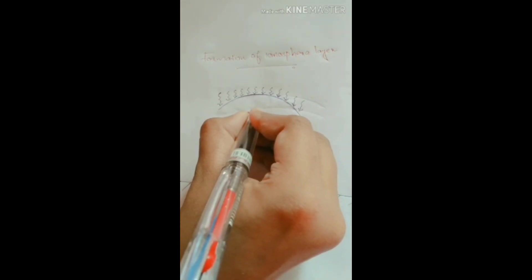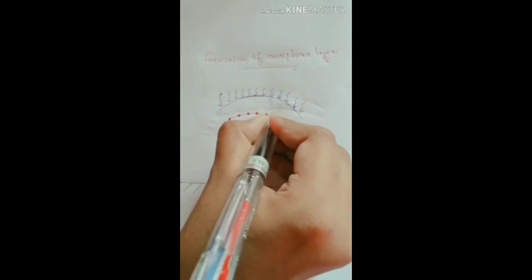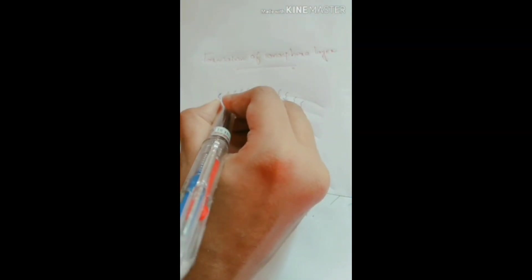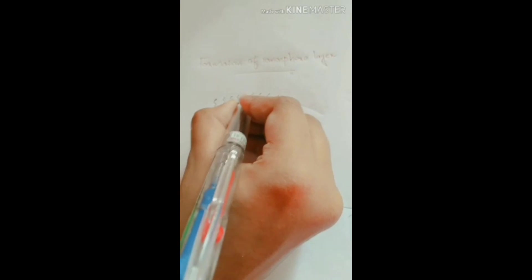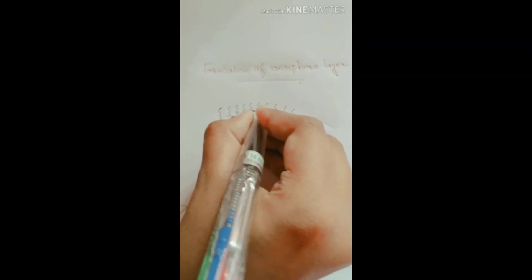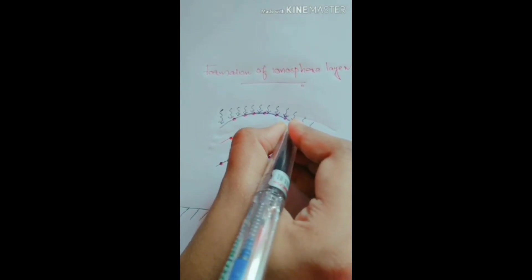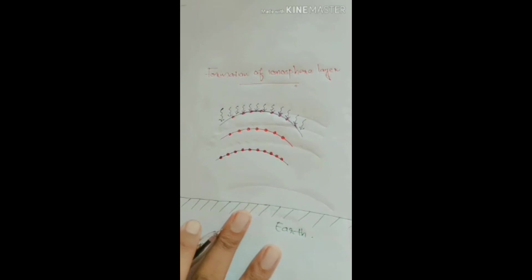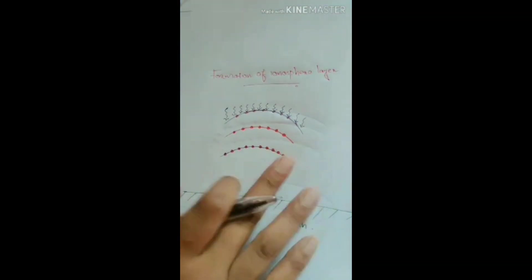The density of atoms is a little less than the previous layer. Here the density of atoms is a little more reduced. This is the density of atoms arranged.